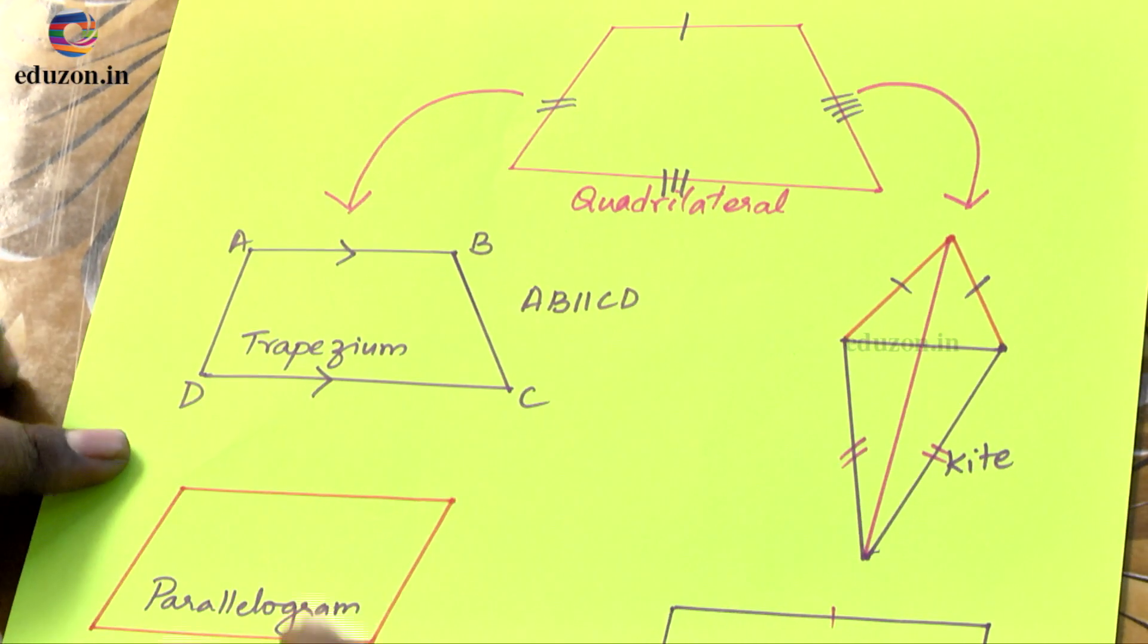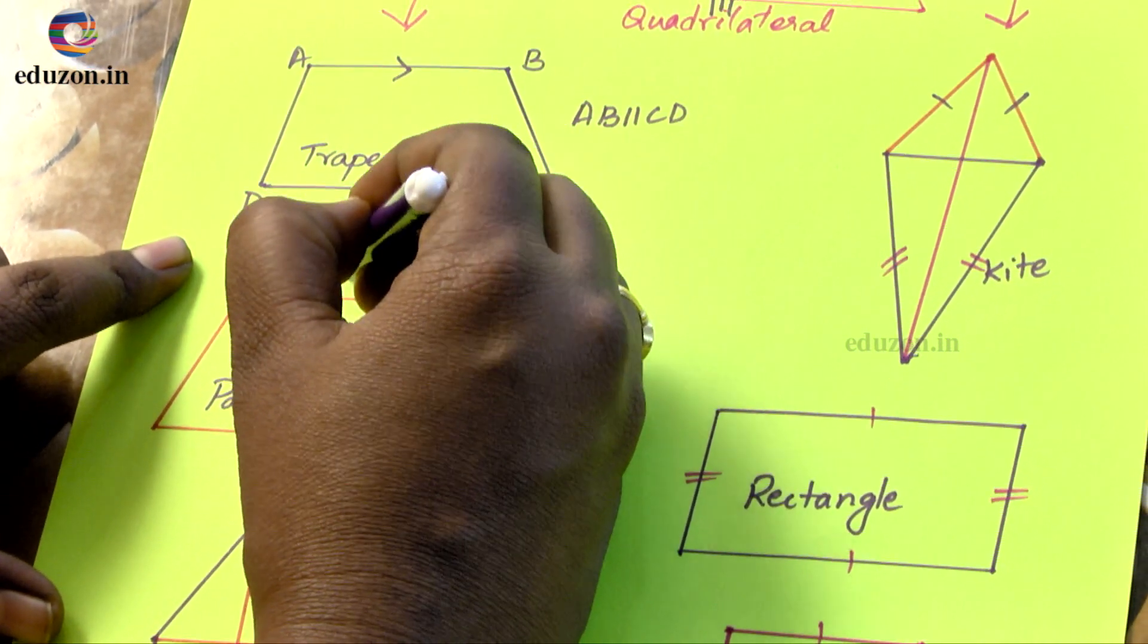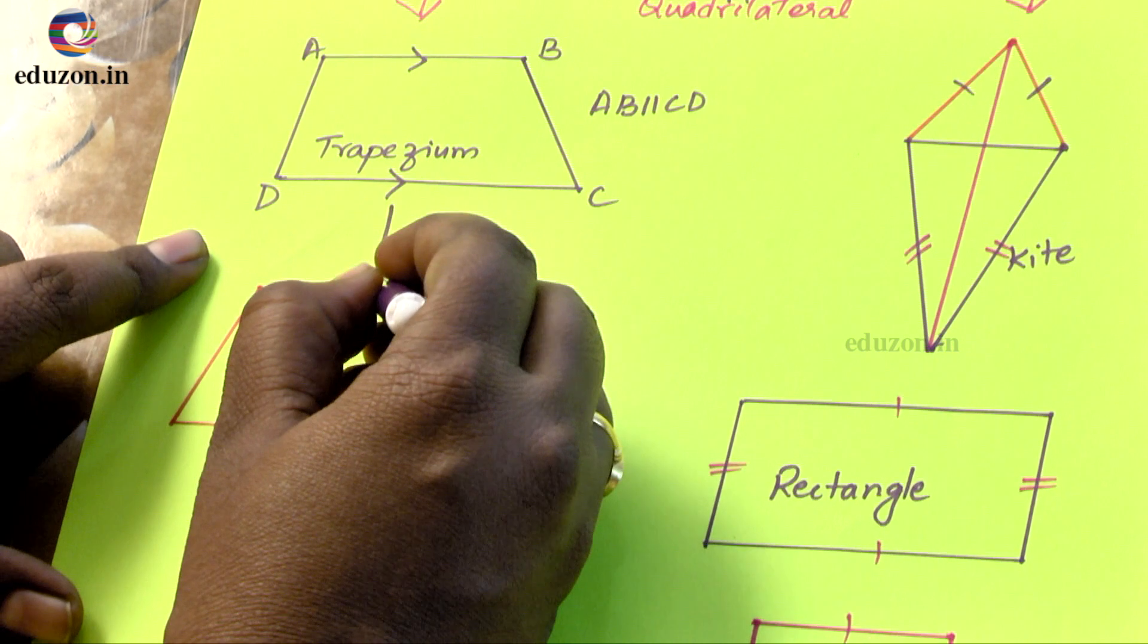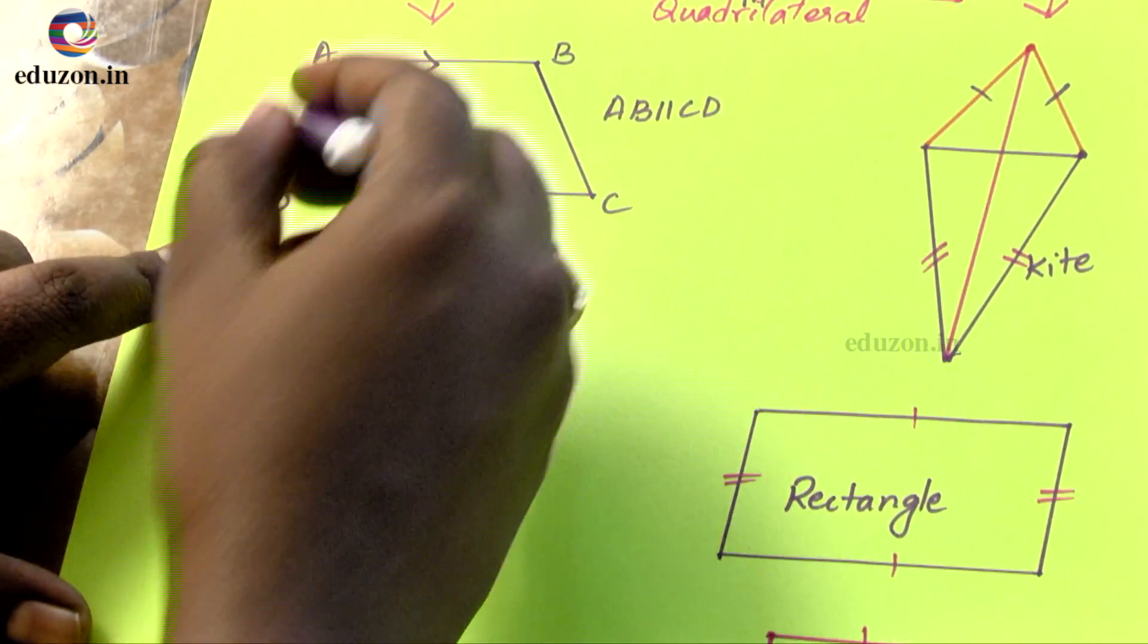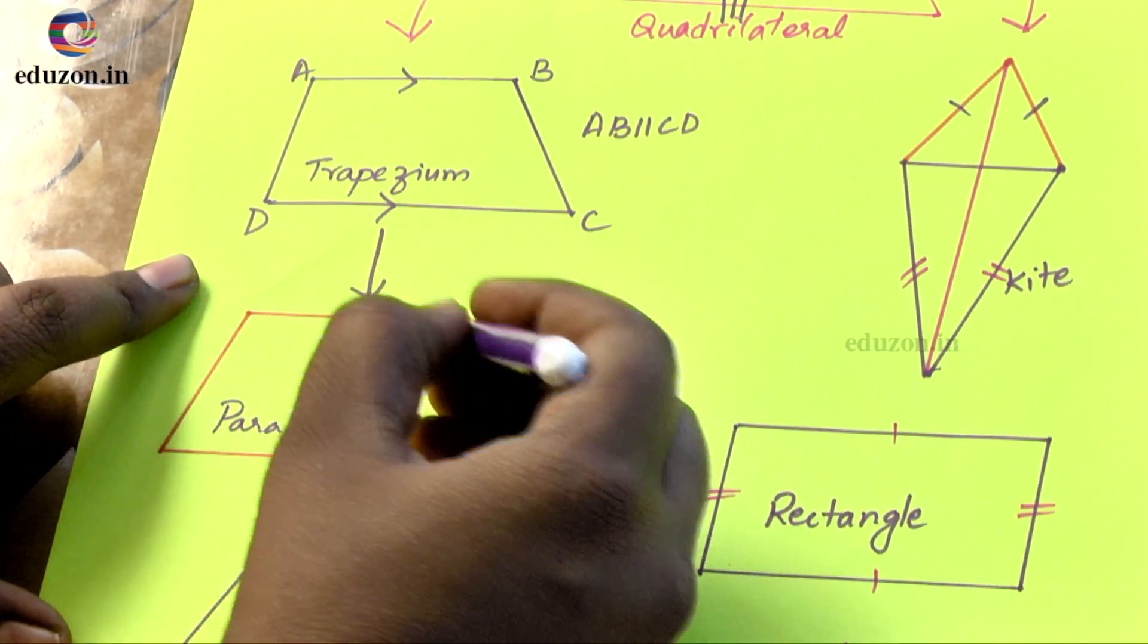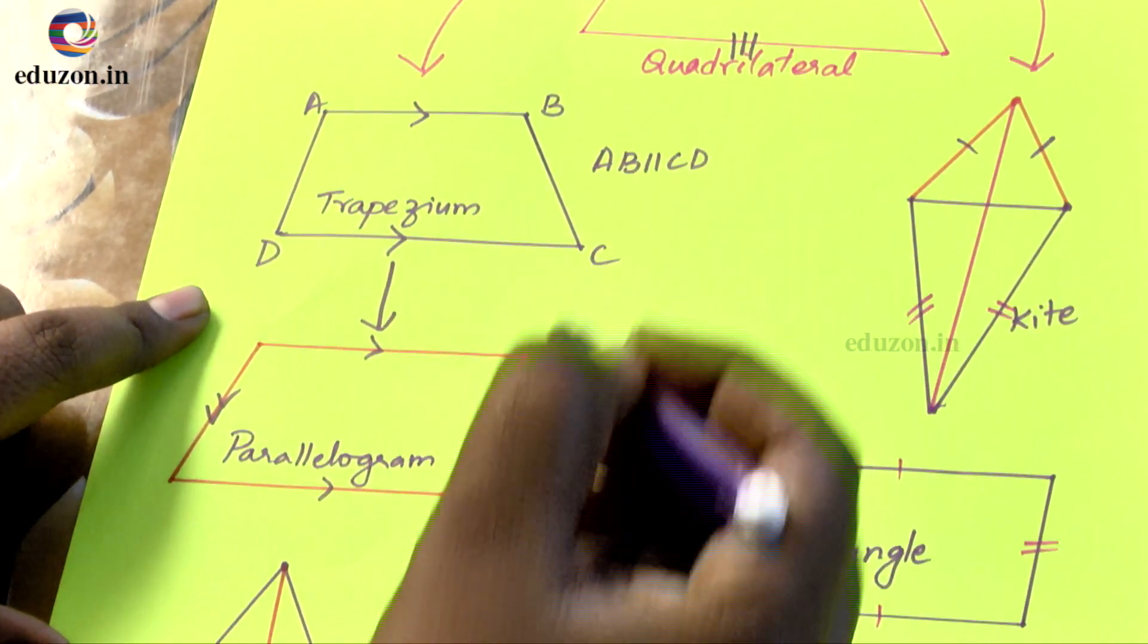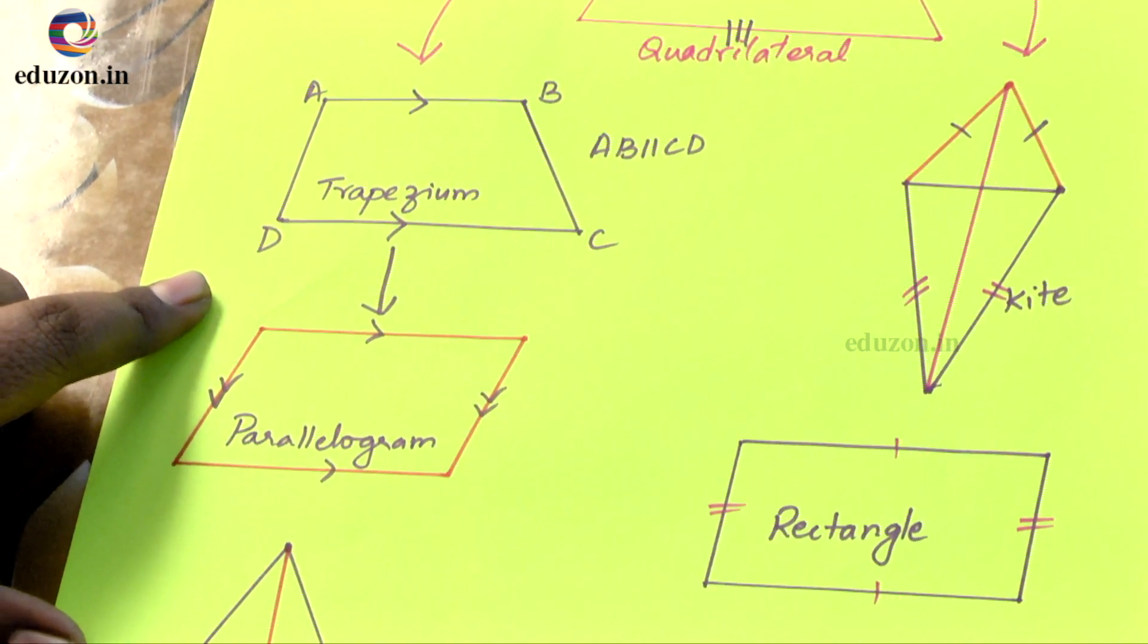So now we can see one more quadrilateral here where the same trapezium keeping the same opposite sides parallel. Now if I try to change the remaining two sides, that is the other pair also parallel, you can observe this is the symbol that is used to show the parallel lines.